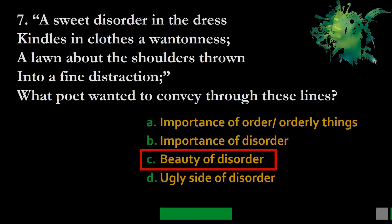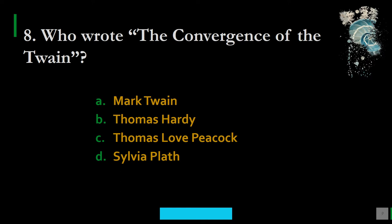Question 8: Who wrote The Convergence of the Twain? Options are A. Mark Twain, B. Thomas Hardy, C. Thomas Love Peacock, D. Sylvia Plath. The correct option is B — Thomas Hardy composed this famous elegy called The Convergence of the Twain.